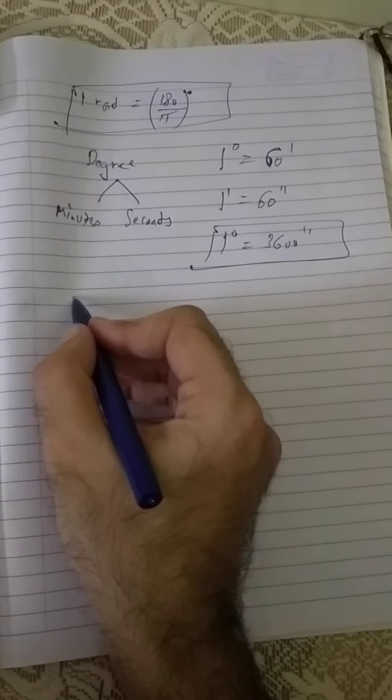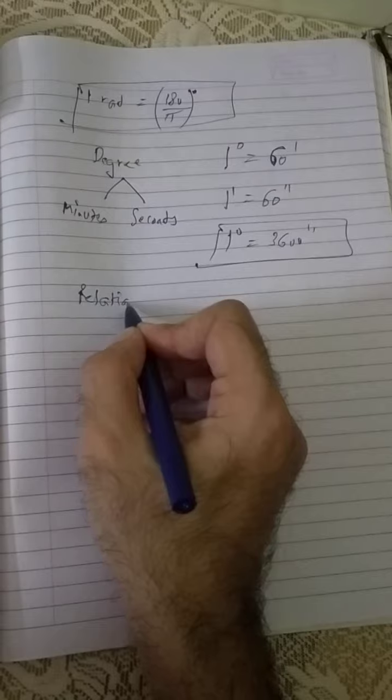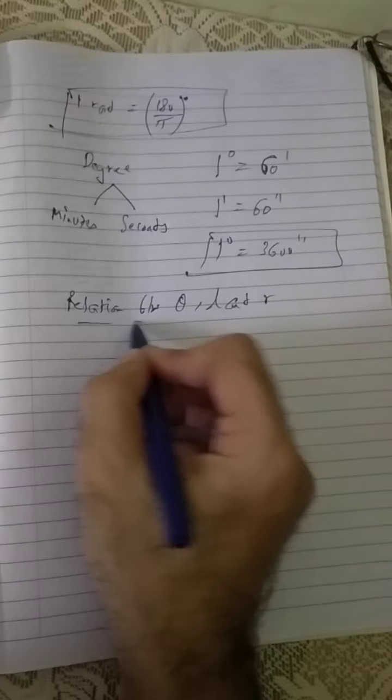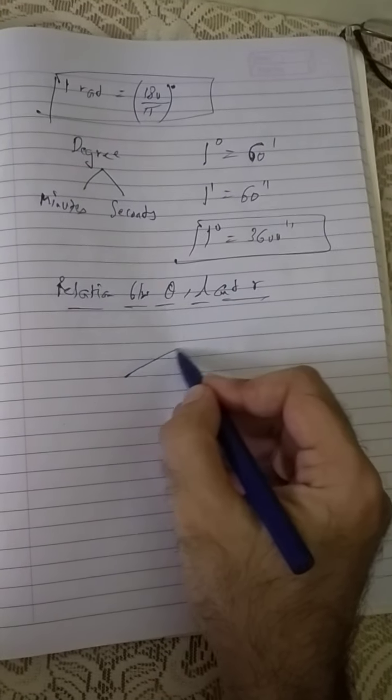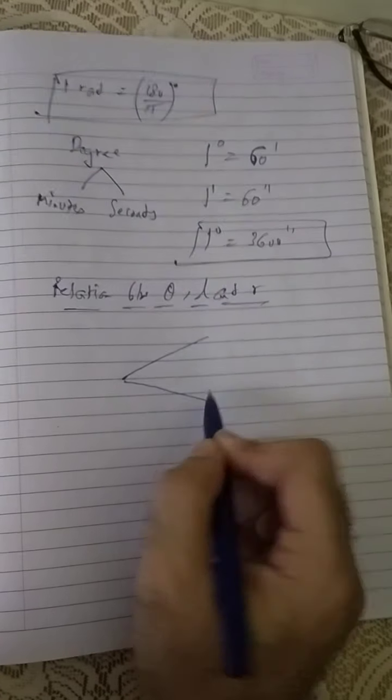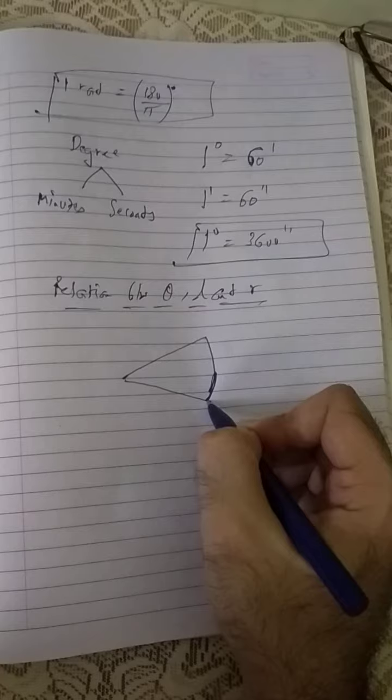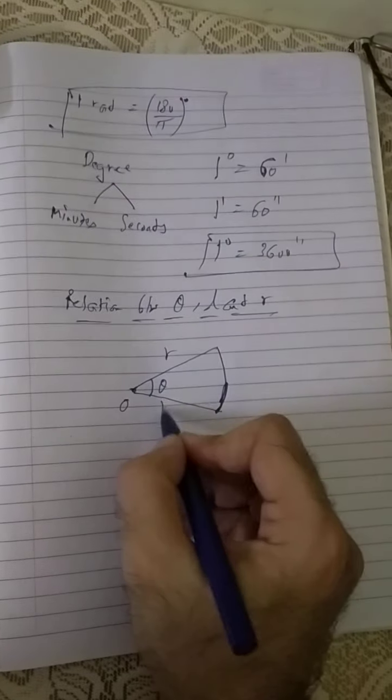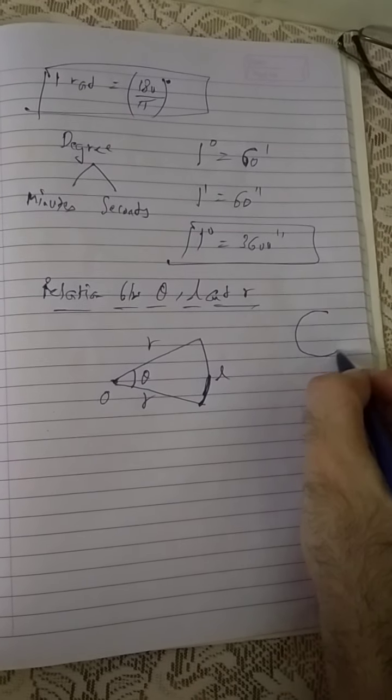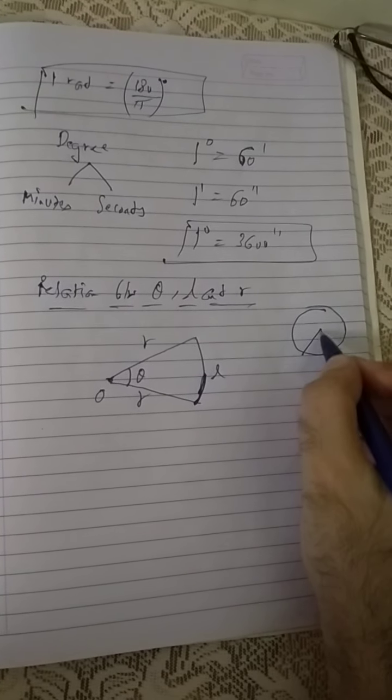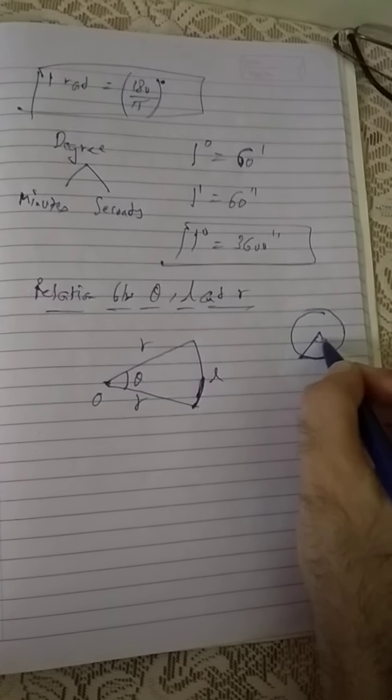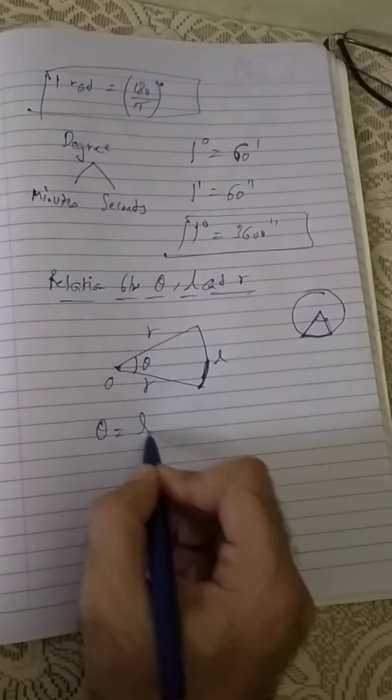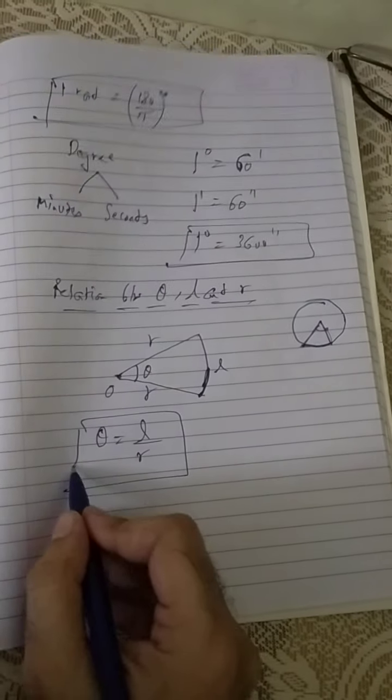Moreover, we have the relation between theta, length of the arc, and radius also. It is a very popular relationship. Suppose if this is a circle or arc, suppose this is the arc, this is the center, and this is the angle between the two radii. We have also studied, if you remember, area related to circles. We have done this. If you remember these kind of diagrams, sector—same figure. What is the relationship between these three parameters? Theta is always equals to L upon R.